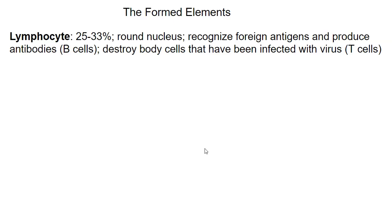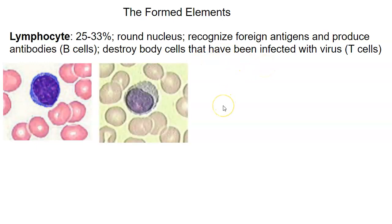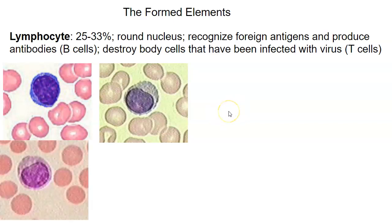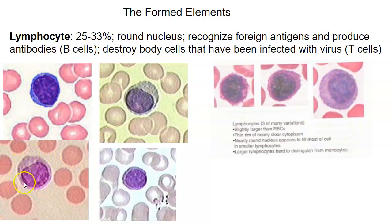The last agranulocyte is the lymphocyte, accounting for about 25% to 33% of white blood cells. It has a round nucleus that often occupies most of the cell volume, leaving just a thin band of cytoplasm around it. There are two kinds: B cells, which generate antibodies that bind to and destroy foreign antigens, and T cells, which destroy cells infected with viruses. Lymphocytes are only slightly larger than red blood cells, and a larger lymphocyte can look similar to a monocyte.